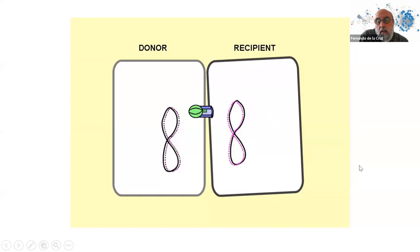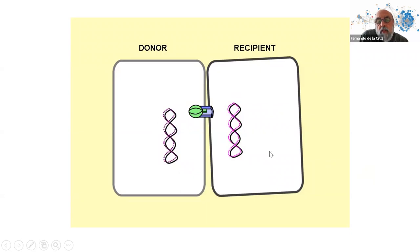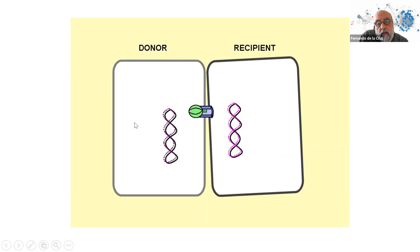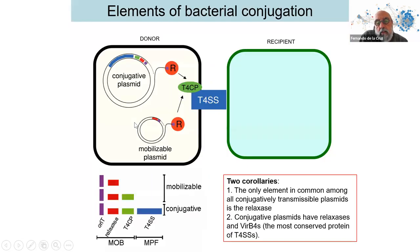The replication machinery of the recipient cell replicates the lagging strand. At the end of conjugation, there are two copies of the DNA: one intact in the donor and one in the recipient.